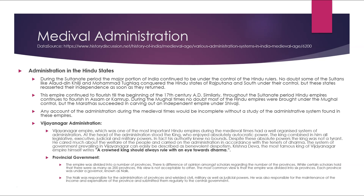Vijayanagara administration: The Vijayanagara Empire was one of the most important Hindu empires during the medieval period and had a well-organized administrative system. At the head of the administration stood the king, who enjoyed absolutely autocratic power, combining legislative, executive, judicial and military powers in himself. Despite these absolute powers, the king was not a tyrant — he cared about the welfare of the people and carried out administration in accordance with the tenets of dharma. The system of government at Vijayanagara can be described as benevolent despotism.